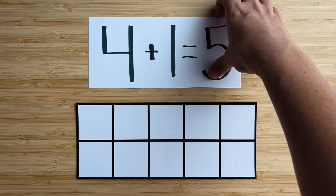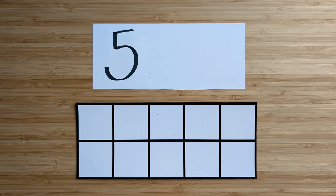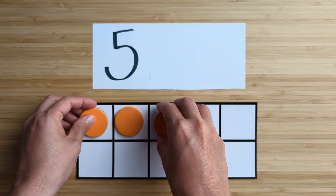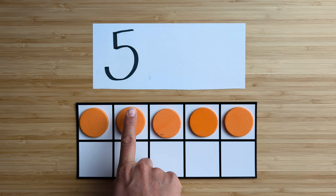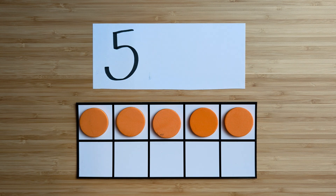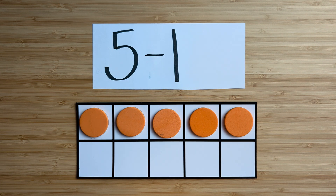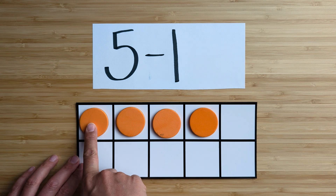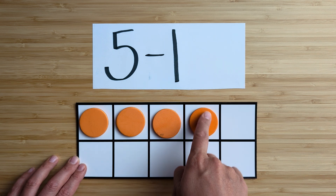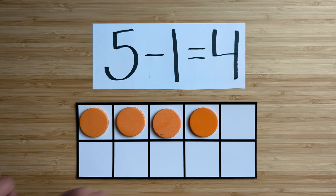Clear off your boards. Let's try the next one. Make the number five. Point and count: one, two, three, four, five. What's one less than five? Point and count: one, two, three, four. Four is one less than five. Nice job.